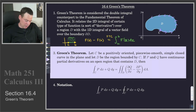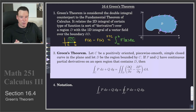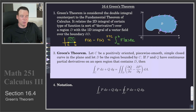So that's Green's Theorem: the line integral is related to the region integral. The Fundamental Theorem of Calculus relates a one-dimensional integral to a difference of two values — maybe we can think of that as a zero-dimensional integral. Whereas Green's Theorem relates a two-dimensional integral to a one-dimensional integral. It's sort of a step up in dimensions.